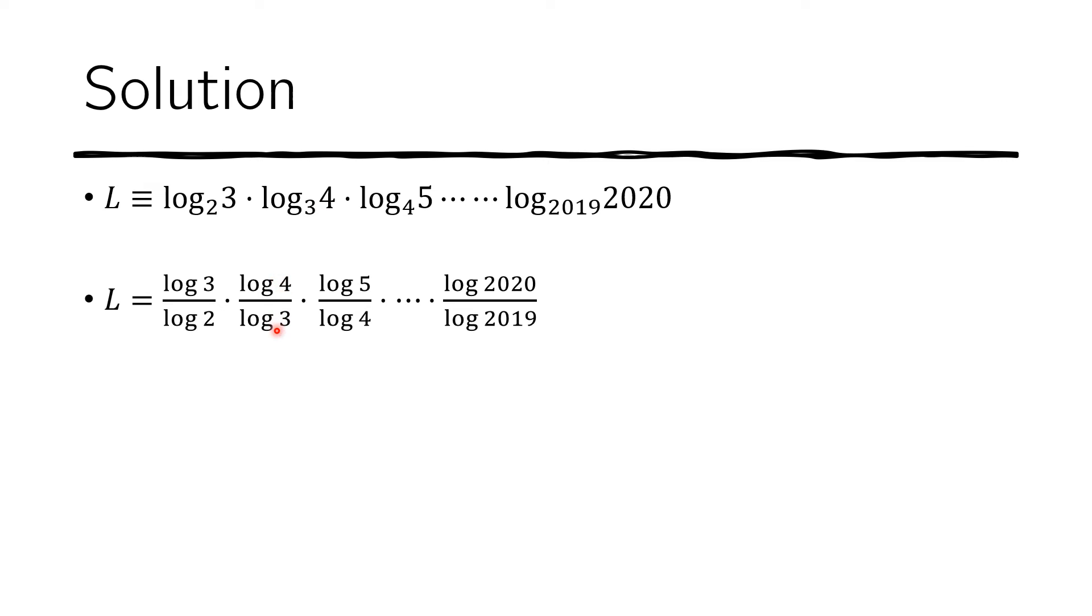Now we do that for the next factor. We get log of 4 over log of 3. And we do that for all the terms. And then the last term will be log of 2020 over log of 2019.